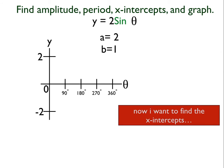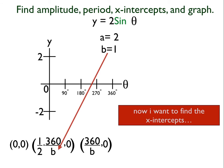So now I want to find my x-intercepts. And if you recall, I used the formula that I gave you earlier. This is the formula to finding my x-intercepts. So the first one is easy. (0, 0). And the second one, I know that my value for b is 1. So I can input 1 for all of my b's. And then I can just do the arithmetic, and I know 360 divided by 2 is 180. And 360 divided by 1 is 360. And there it is. Those are now my x-intercepts.